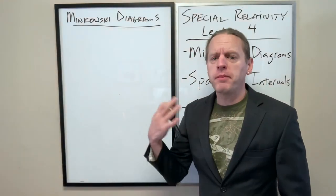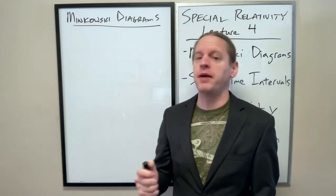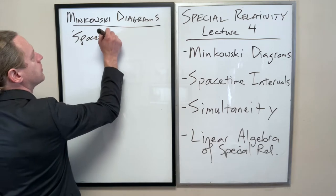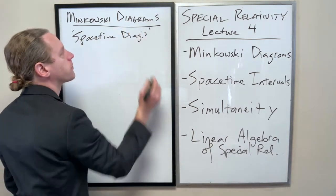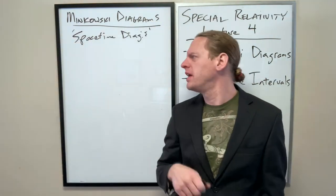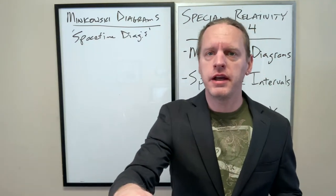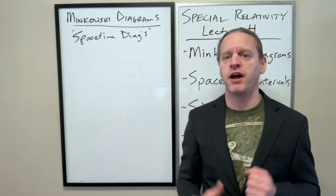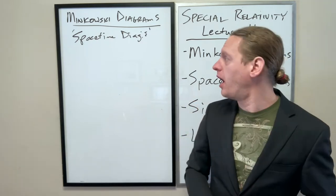Minkowski diagrams are synonymous with spacetime diagrams, so I'll use these words interchangeably. Minkowski was a contemporary of Einstein — he dealt more with the strictly mathematical interpretation and development of things, whereas Einstein was equally concerned with the physical development and how to physically interpret these mathematical oddities.